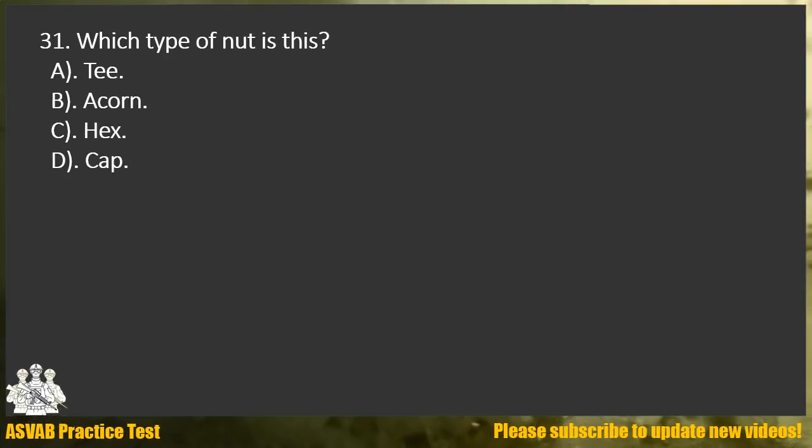Question 31. Which type of nut is this? A. T. B. Acorn. C. Hex. D. Cap.